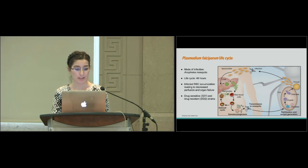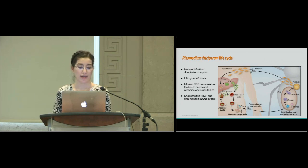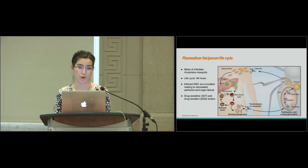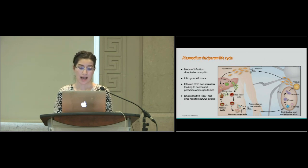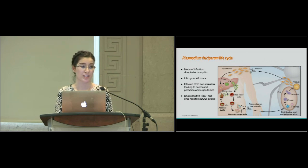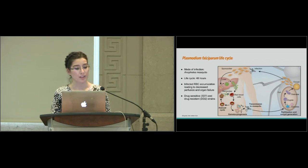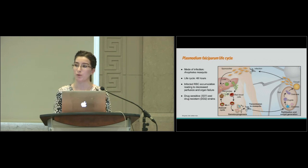Within the red blood cell, the parasite can hide from the immune system and replicate. Within 48 hours, it will release 8 to 12 spores into the bloodstream, so the spread is quite rapid. It is this stage of malaria—the red blood cell stage—that causes the clinical manifestations of the disease. When left untreated, infected cell accumulation can lead to decreased perfusion and organ failure.